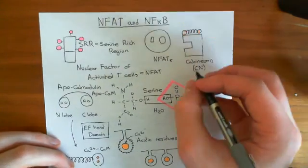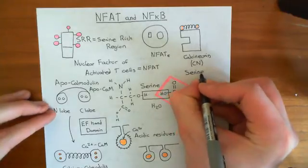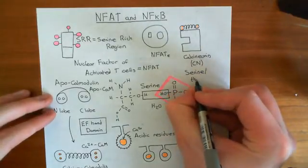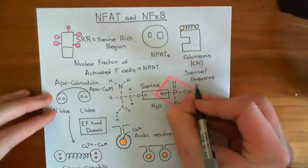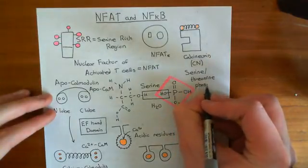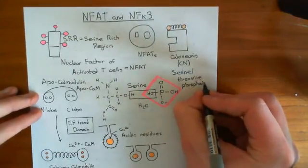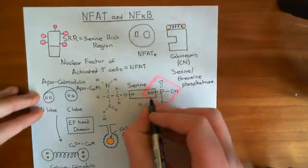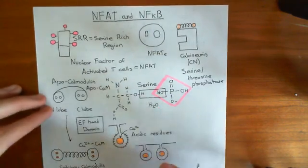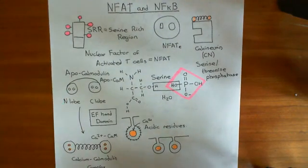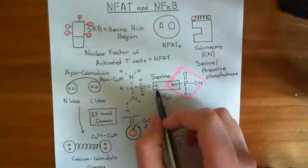Calcineurin is what is known as a serine-threonine phosphatase, which means that it is capable of removing phosphate groups from serine and threonine residues which have been phosphorylated. It will break the bond between the phosphate group and the serine residue, or threonine residue — but in this case, serine is the relevant residue.